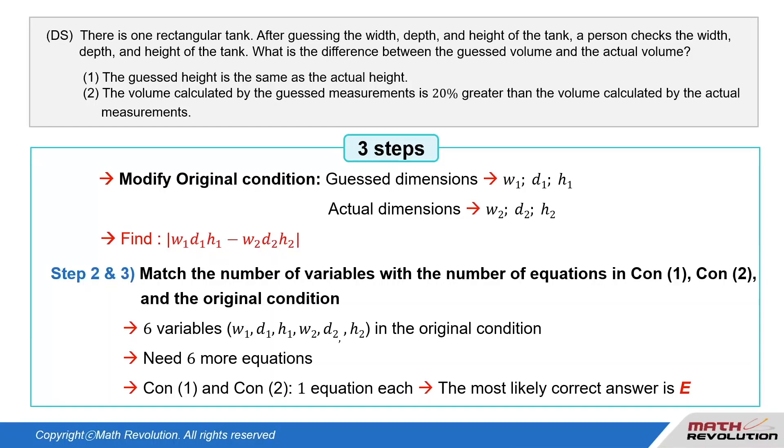To match the number of variables with the number of equations, we need six more equations. Since conditions 1 and 2 will provide one equation each, it is about 80% likely that E would be the correct answer.